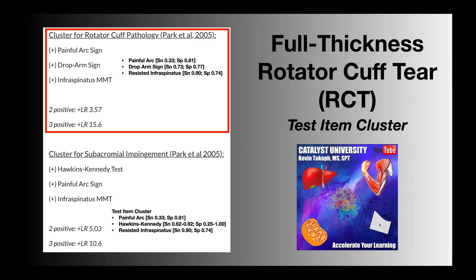However, when you perform all three tests of the cluster, the advantage is you can pool the results, and those pooled results give you positive likelihood ratios, shown in the bottom left of the red box. When two of these tests are positive — it does not matter which two — the positive likelihood ratio associated with a full thickness rotator cuff tear is 3.57. When all three tests are positive, the positive likelihood ratio jumps all the way to 15.6.